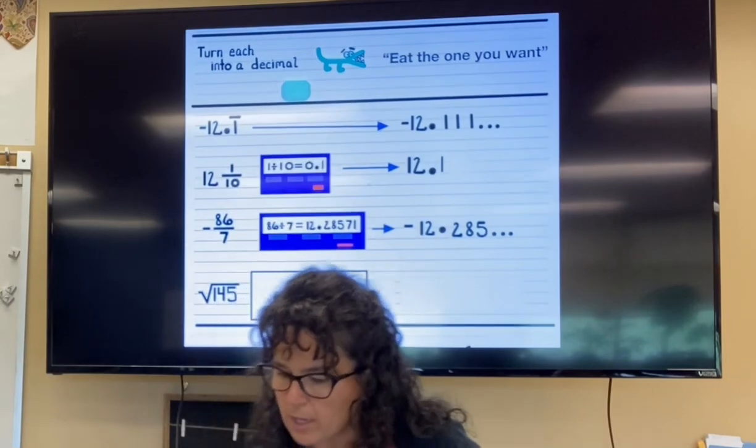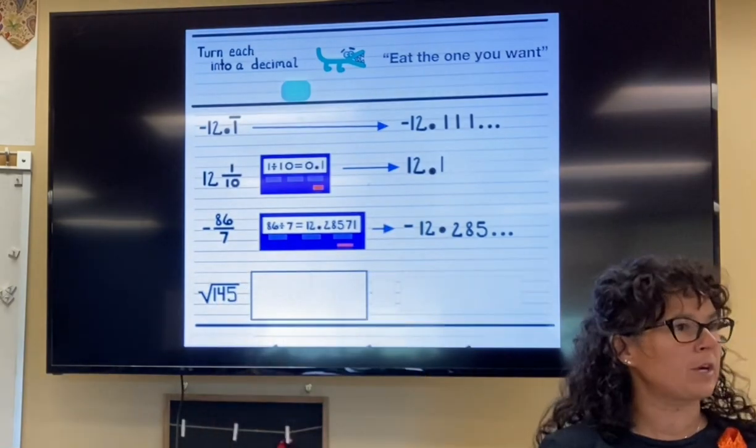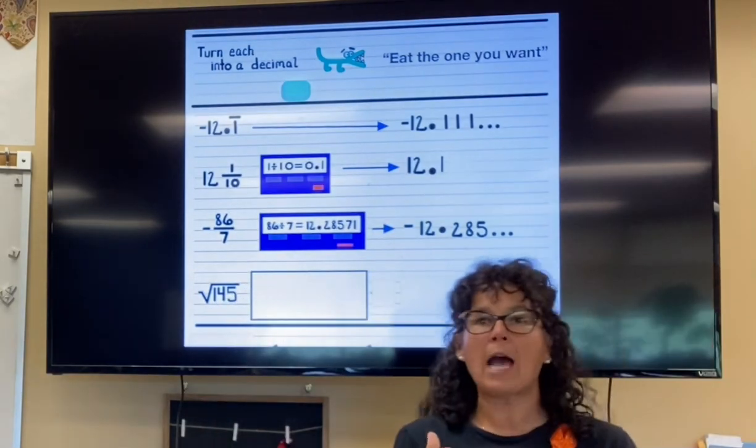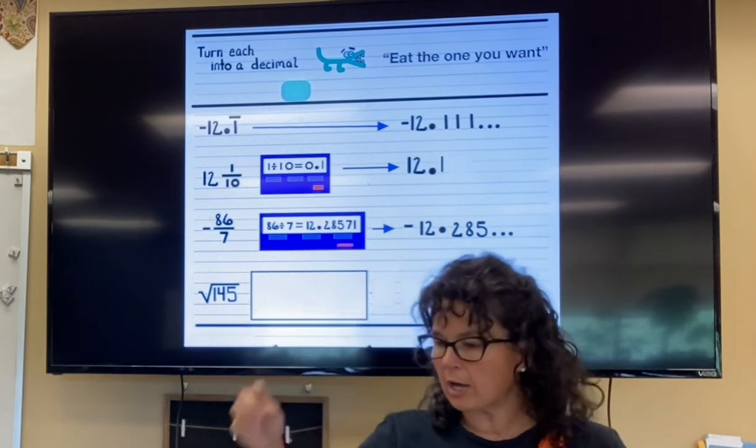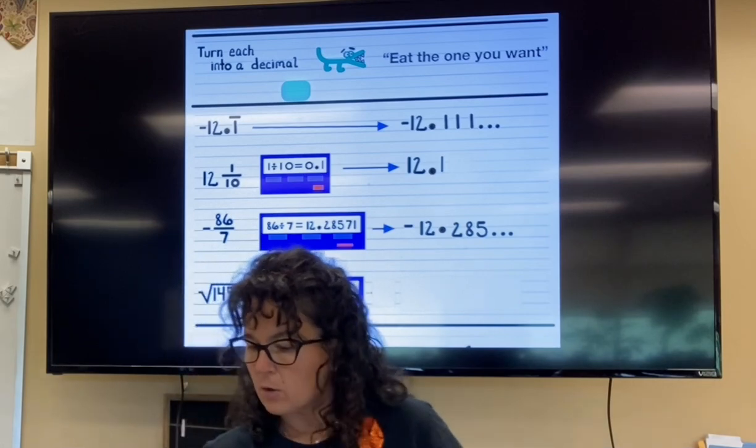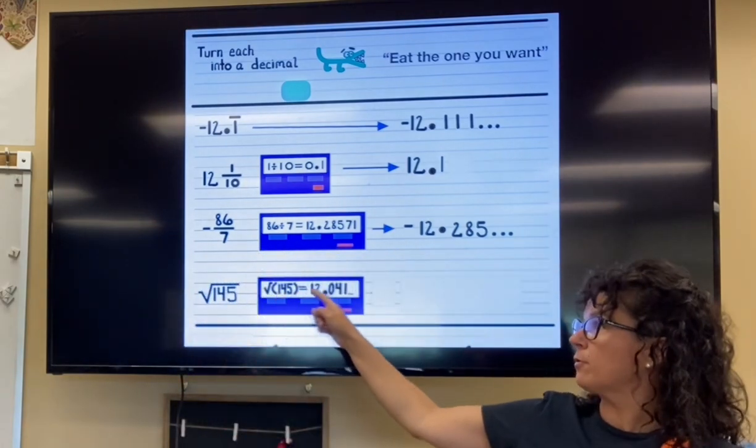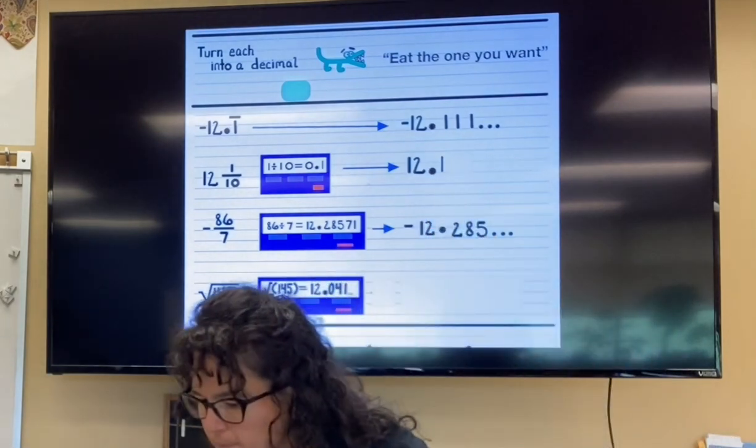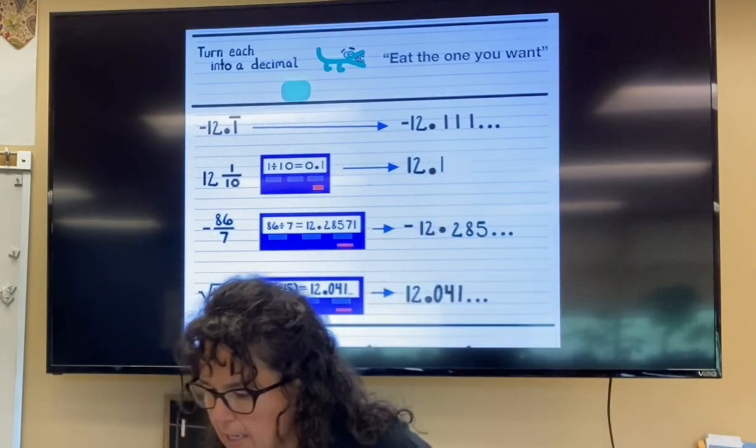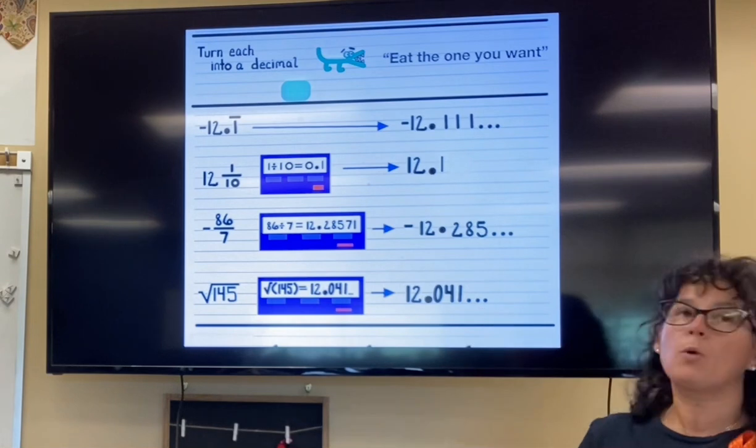Then one more number here, square root of 145. We just showed how to put in a square root in your calculator. So you do the square root of 145. And once you've typed in the square root of 145, the screen is going to be filled with numbers. So coming off to the side, I now have 12.041.